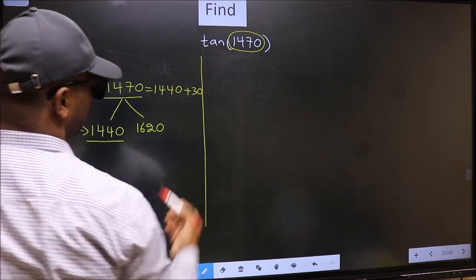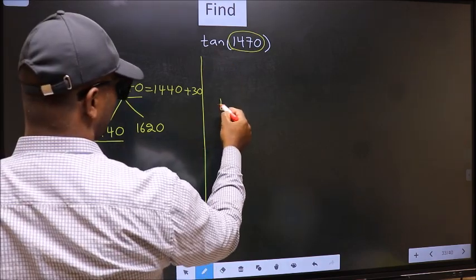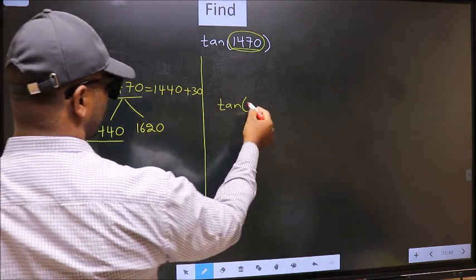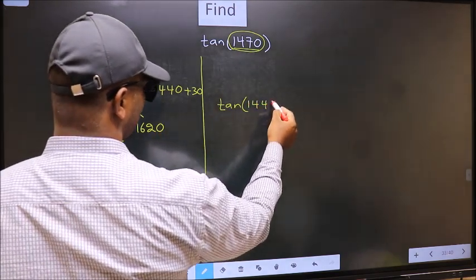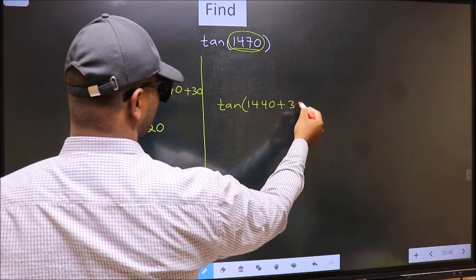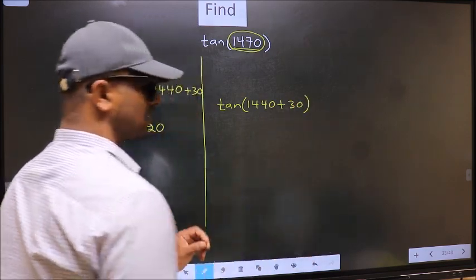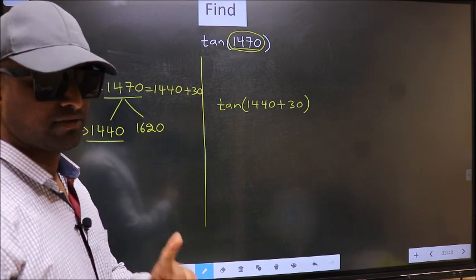So this will become tan. In place of this, now we should write 1440 plus 30. This is your step 1.